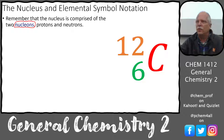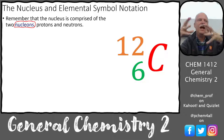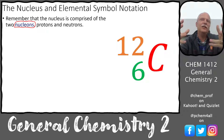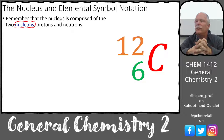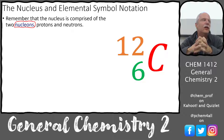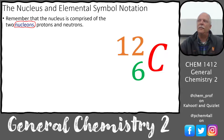You have nucleons and electrons. Electrons are outside the nucleus; nucleons are inside the nucleus, divided into protons and neutrons. If you smash protons and neutrons, other things called quarks — up and down quarks — are inside, but we're not going into that. We will talk about protons, neutrons, and electrons, and also a little bit of antimatter and gamma rays.